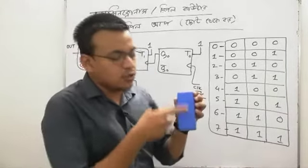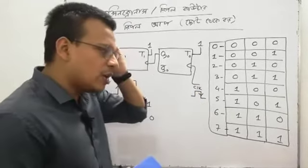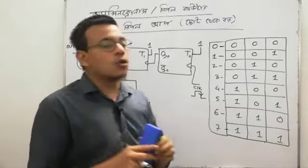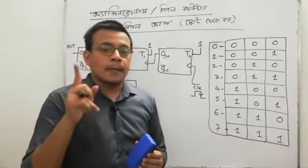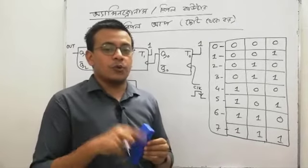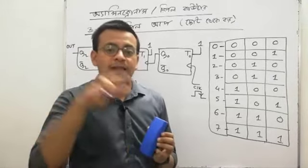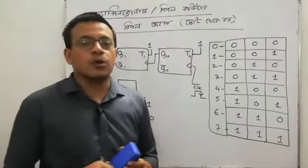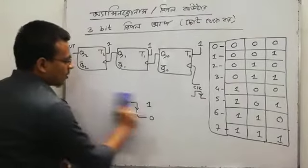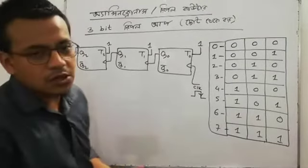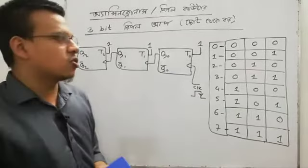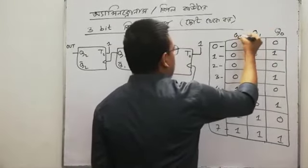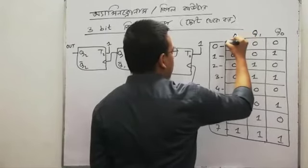This flip-flop and ripple-up counter — when you have negative transactions, or when you have 1 to 0, the flip-flop toggles. When you are 0, you will be able to do that. So very simply, when you are 0, you will be able to do that. When you are 0, you will be able to do that. And output is created.